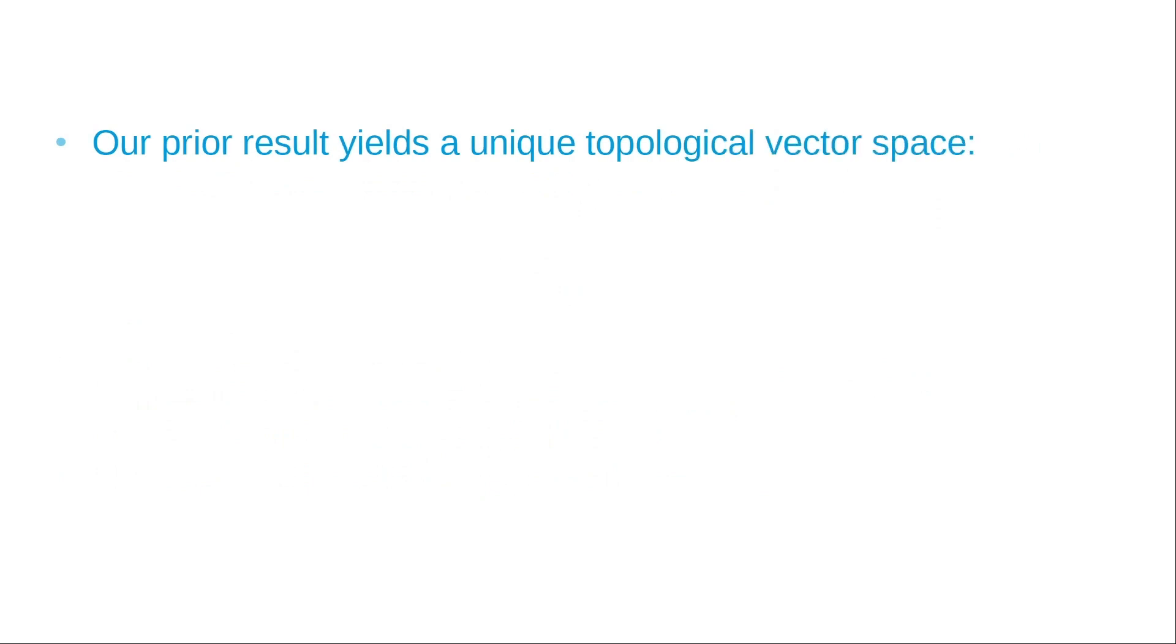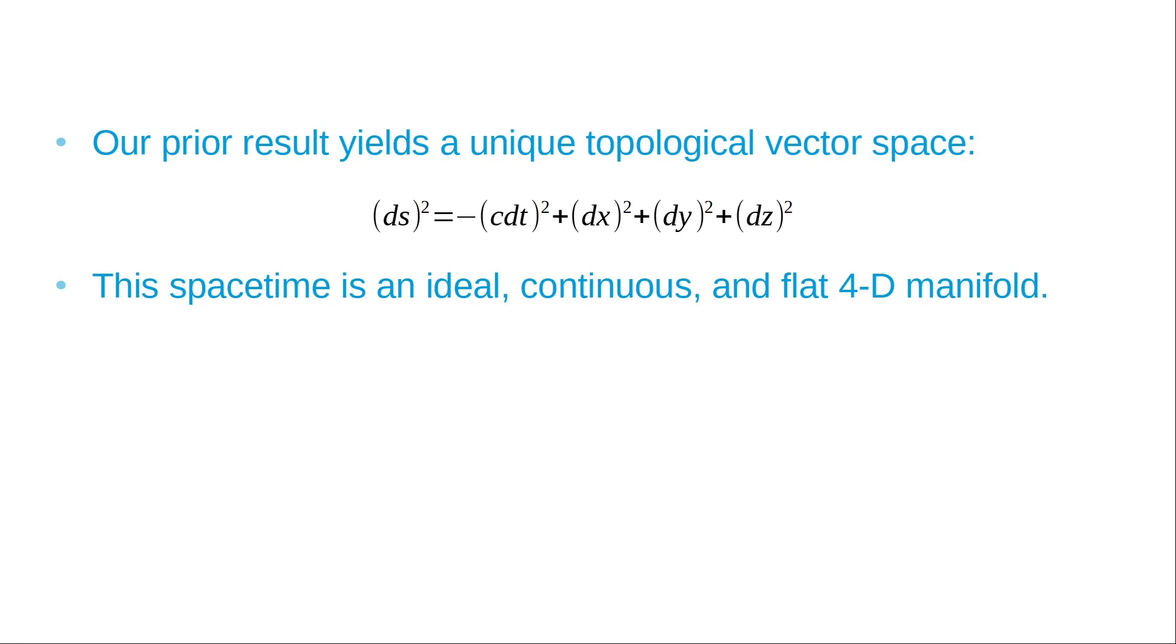Our prior result yields a unique topological vector space, the Minkowski metric space. This vector space is composed of a very specific type of algebra. Inherent inside are the Clifford algebras, which generate Lie algebras, rotations in the Poincare group. The spacetime is an ideal, continuous, flat 4D manifold for which we can perform these transformations.